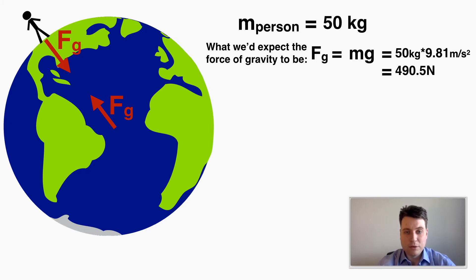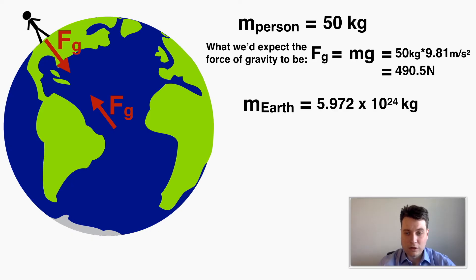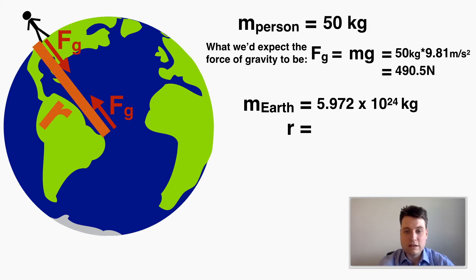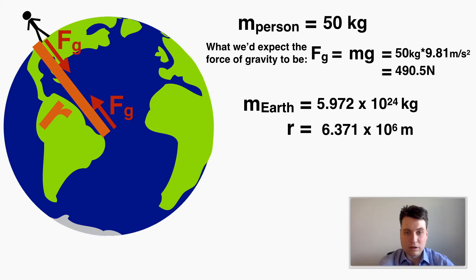For the new force of gravity equation we need the mass of both objects. Earth's mass is 5.972 times 10 to the 24 kilograms. For r, the distance between the two objects — a common misconception is saying zero because the person stands on the earth, but r is the distance between the centers of the objects, which equals the radius of the earth: 6.371 times 10 to the 6 meters. If an object is on earth, the distance is between that object and the center of the earth.